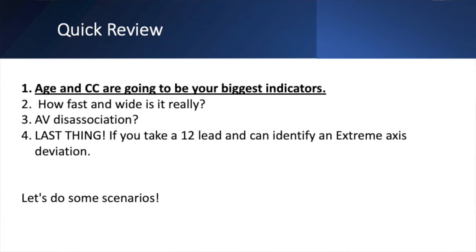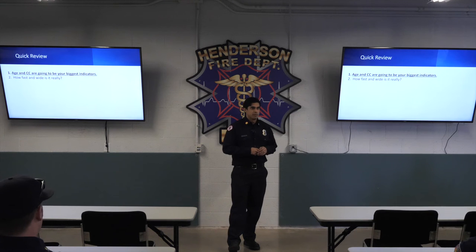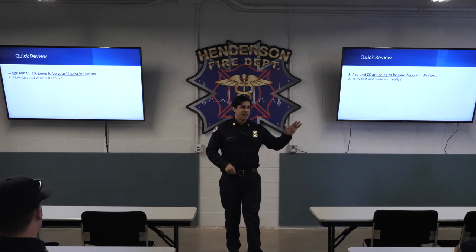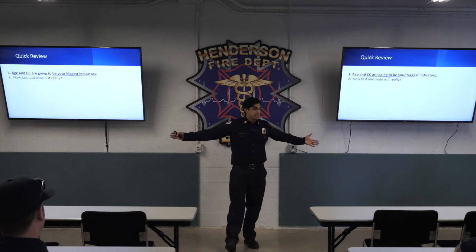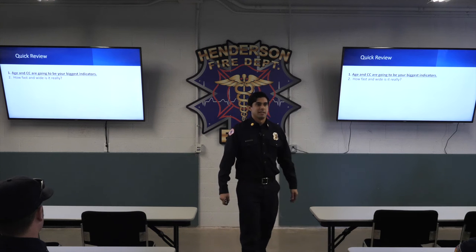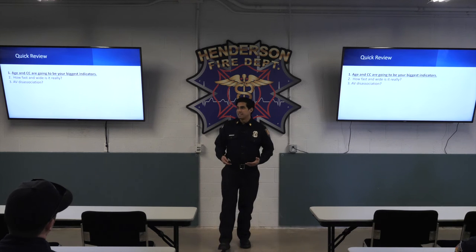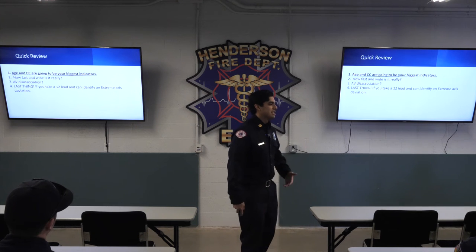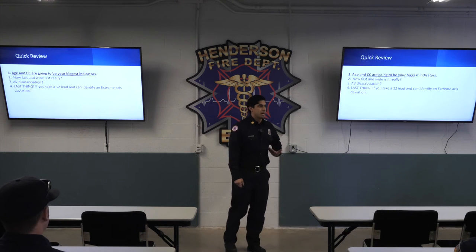Quick review of the four steps. What's our highest indicator? Chief complaint and age. Next: how fast and how wide is it? They have an inverse relationship — very fast but just moderately wide means arrhythmia; scary wide but not super fast means electrolytes. AV dissociation works 100% of the time when correctly diagnosed. And if your patient is stable enough for the 12-lead and AVR is positive, that driving force is coming from the low ventricles — scrutinize as VTAC.